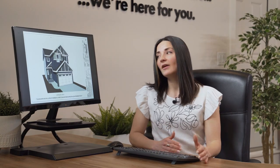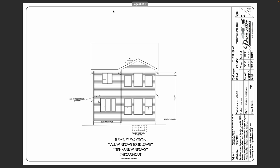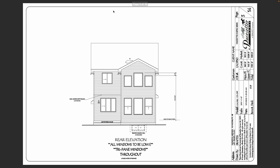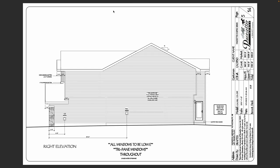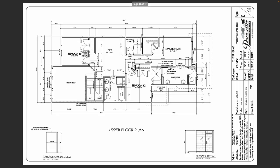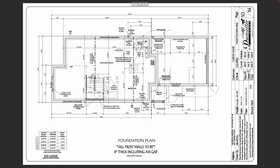There are many drawings that encompass what we refer to as the blueprint of your home. It's going to consist of elevation pages which show what the house is going to look like on the front, the back, the left, and the right side. Also floor plan pages for each level including your main floor, second floor, and basement show the overall layout of the house.